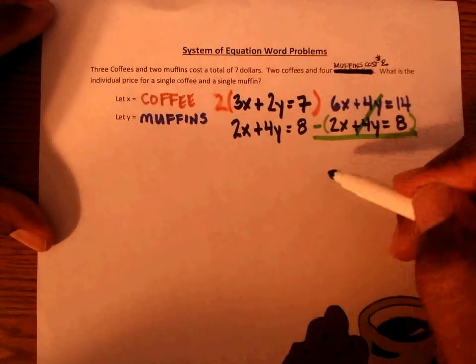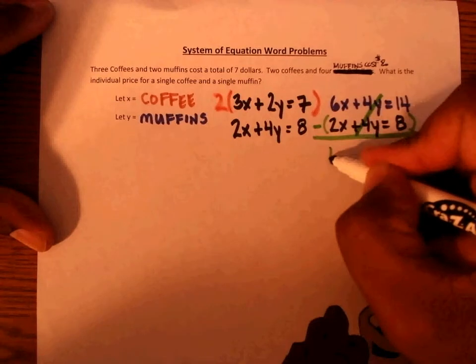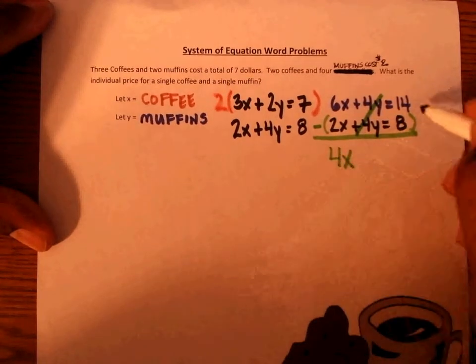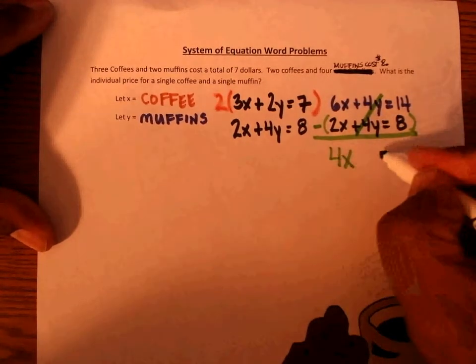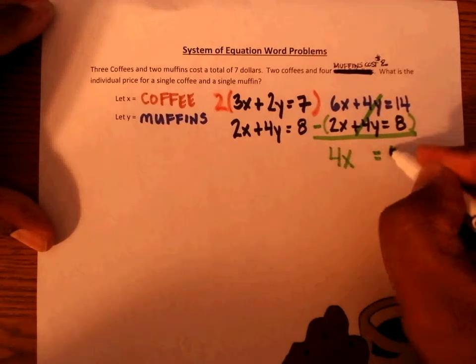Six minus two will give us 4X, and 14 minus 8 equals 6.